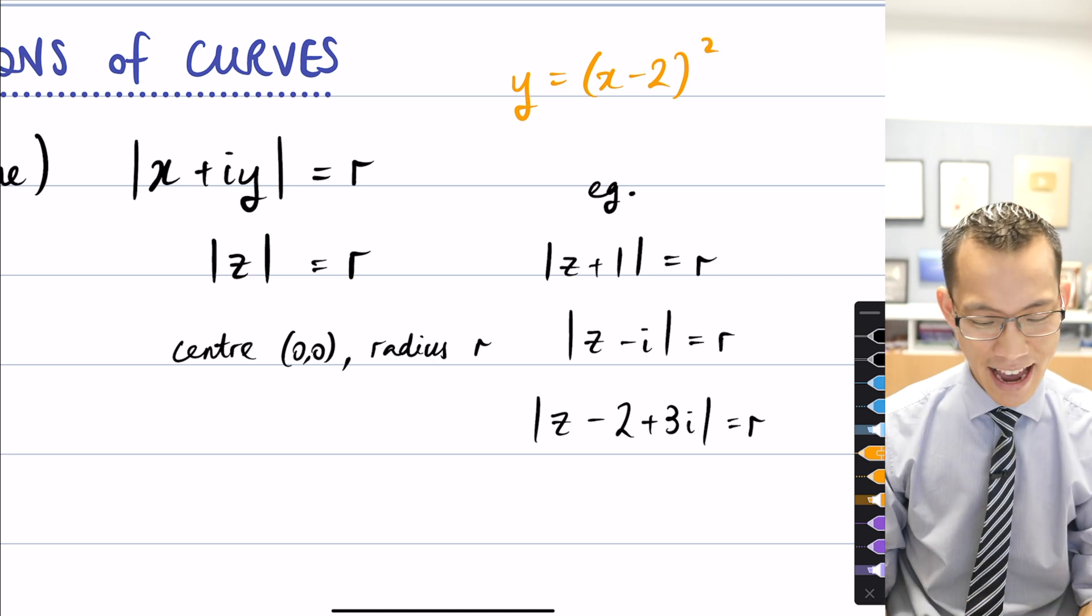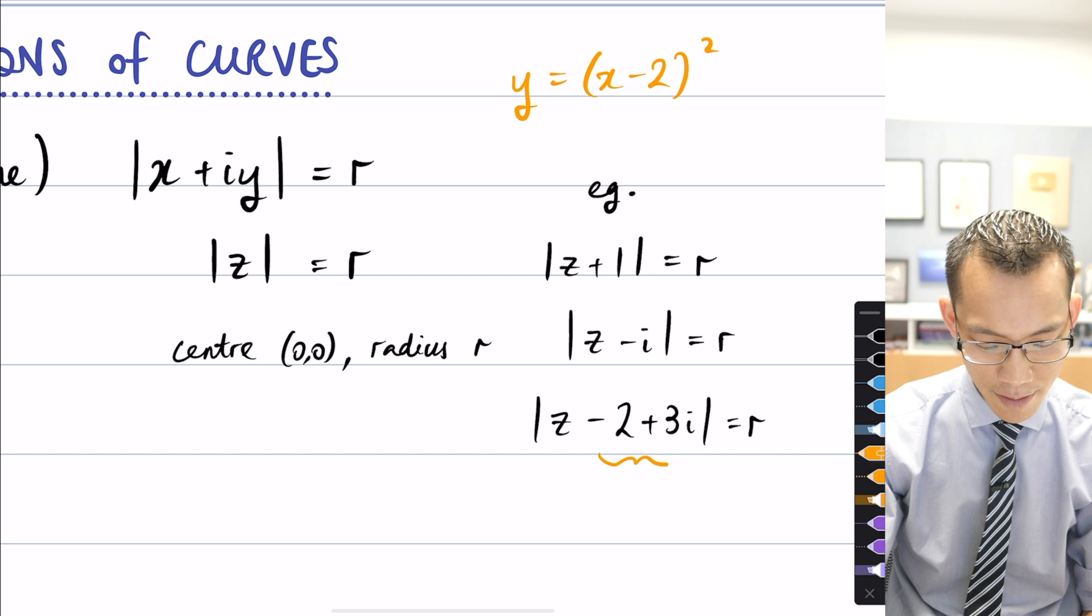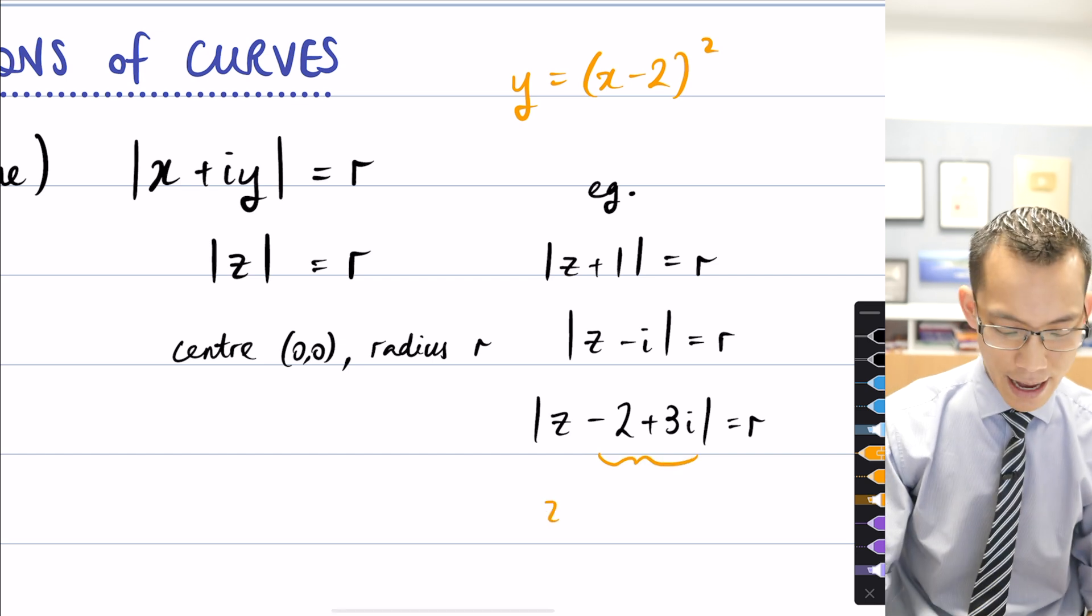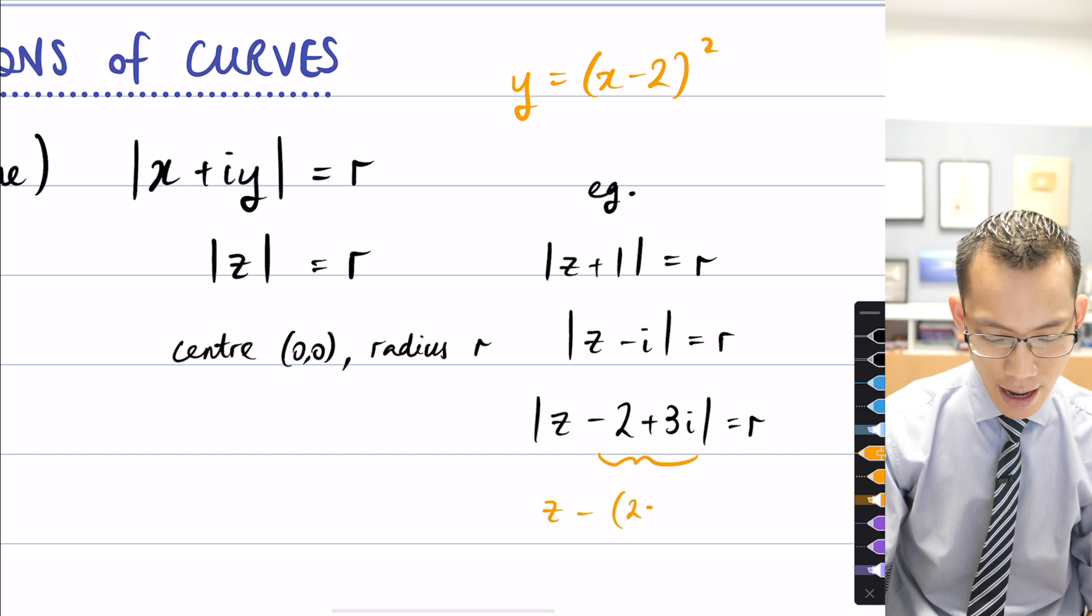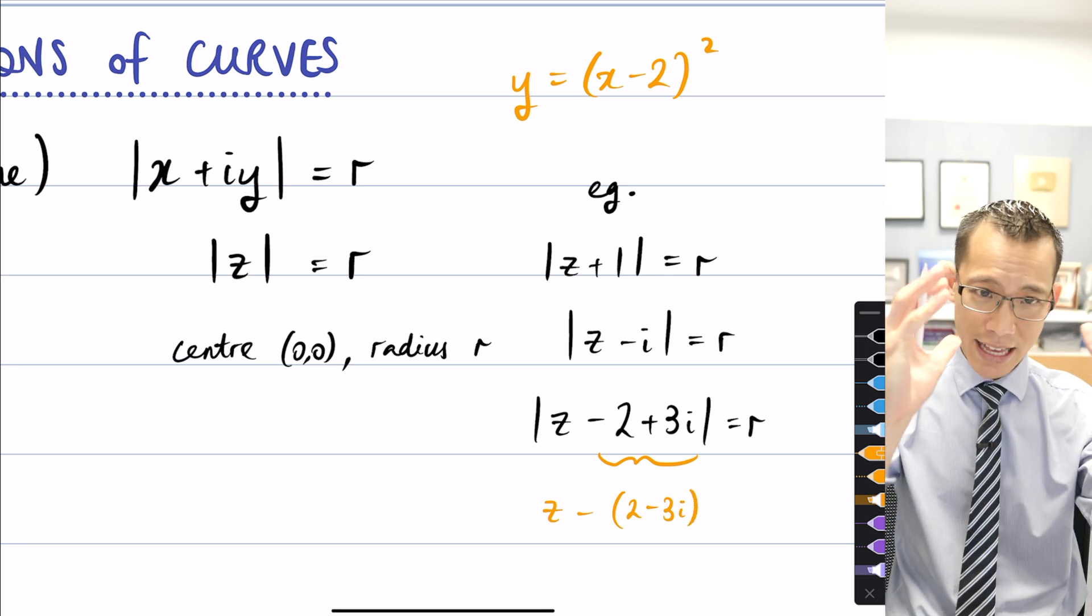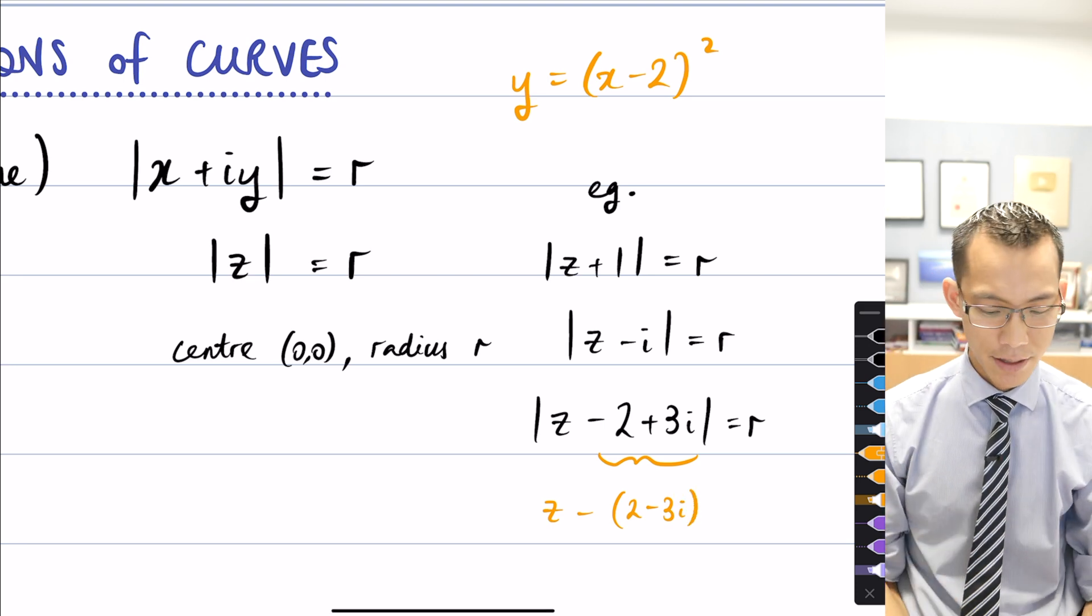So that negative there, you have to kind of read it in the opposite direction, and it's the same thing with this. I would write this as z take away, and then I put 2 minus 3i in brackets, because that whole complex number is really one piece.